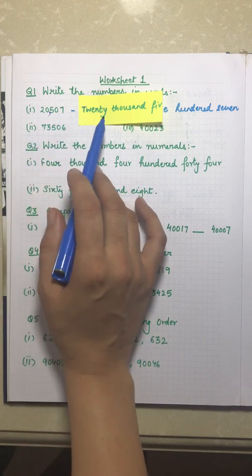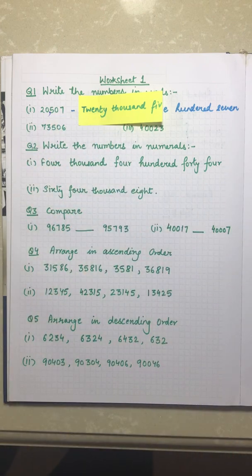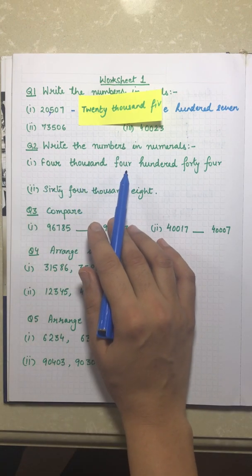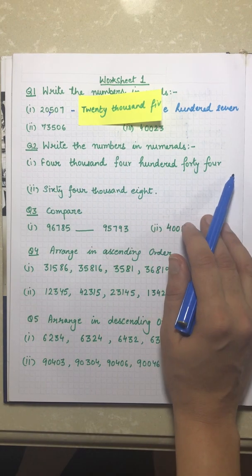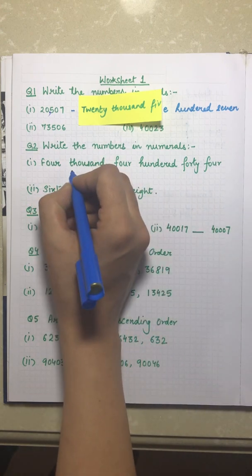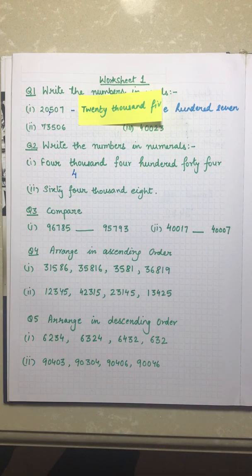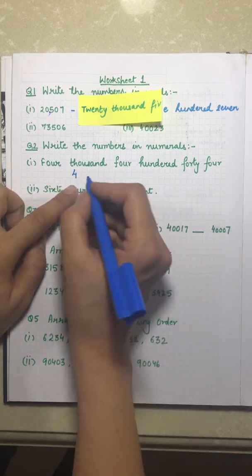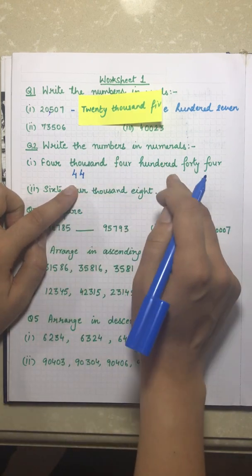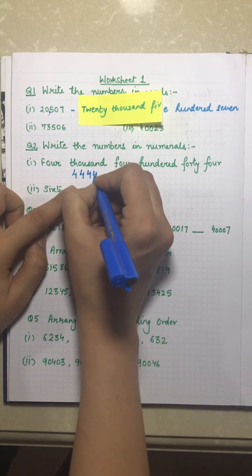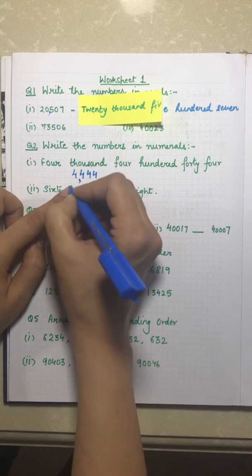Question number two says: write the numbers in numerals. Previously we wrote numbers in words; now we write them in numerals. Four thousand four hundred forty-four — so we get 4,444. That's another question solved.